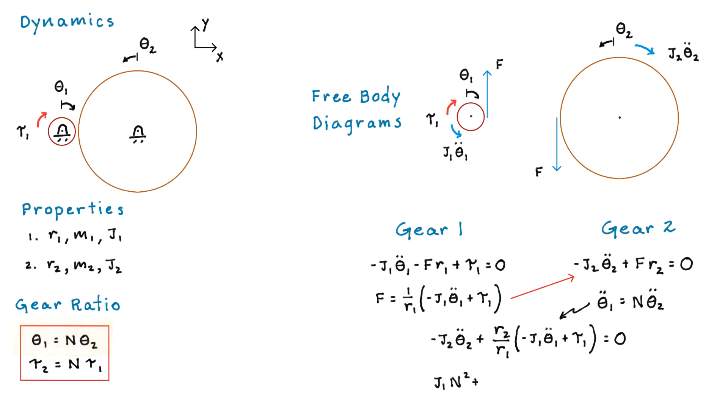So there's our kinematics. Stuff that in, and we get this for our dynamic equation. Now it has that beautiful form of a J theta 2 double dot equals N tau 1, where the J is what we now call the effective inertia. And that's just equal to the J1 N squared plus J2.